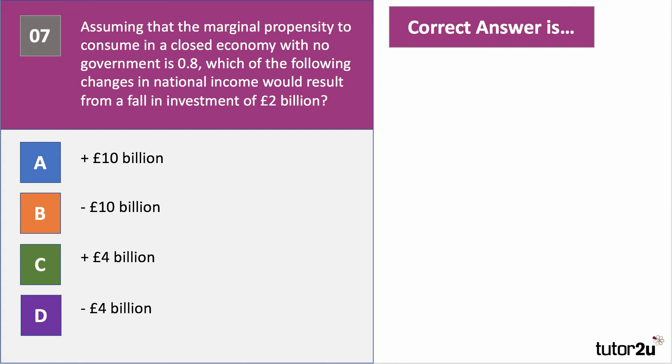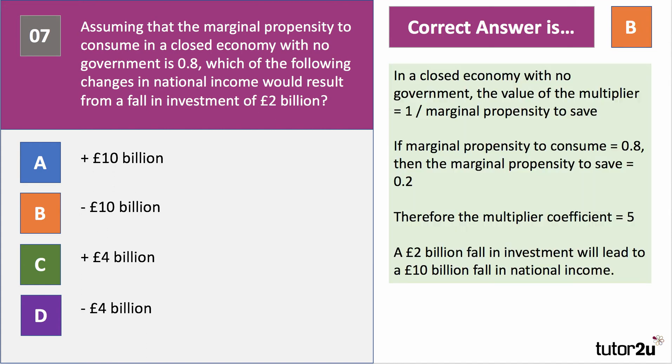The correct answer is B — a fall of £10 billion in national income. We have no government and no trade, so the value of the multiplier is just 1 divided by the marginal propensity to save. The marginal propensity to consume is 0.8, so the marginal propensity to save must be 0.2. Therefore, the multiplier is 5 — 1 divided by 0.2. A £2 billion fall in investment will lead to a negative multiplier effect of minus £10 billion fall in national income. The answer is B.